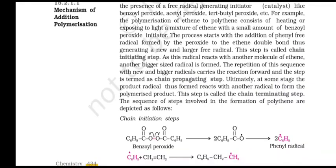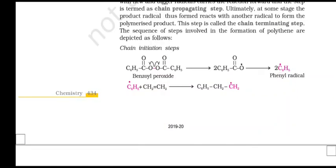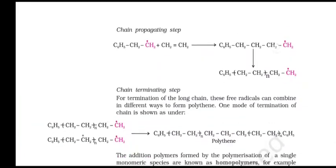Free radical mechanism: a variety of alkenes or dienes and their derivatives are polymerized in the presence of free radical generating initiator catalysts like benzoyl peroxide, acetyl peroxide, or tert-butyl peroxide. For example, the polymerization of ethene to polythene consists of heating or exposing to light a mixture of ethene with a small amount of benzoyl peroxide initiator. The process starts with the addition of a phenyl free radical, formed by the peroxide, to the ethene double bond, thus generating a new and larger free radical. This step is called the chain initiating step. As this radical reacts with another molecule of ethene, another bigger radical is formed. The repetition of this sequence with new and bigger radicals carries the reaction forward and this step is termed the chain propagating step. Ultimately, the product radical reacts with another radical to form the polymerized product.